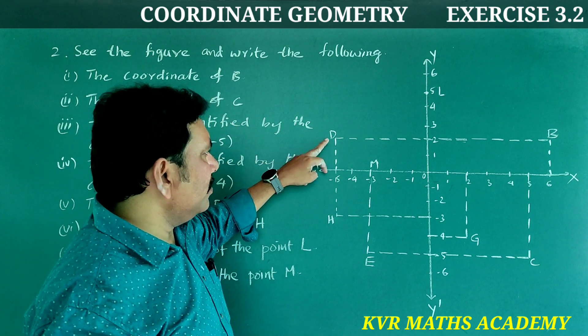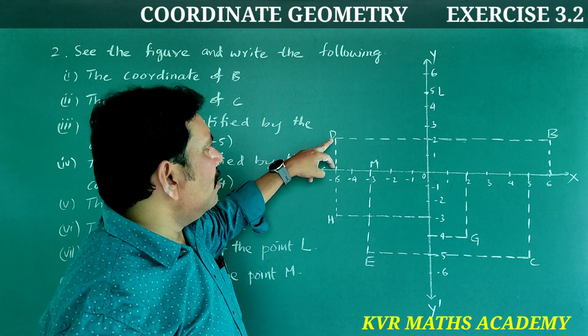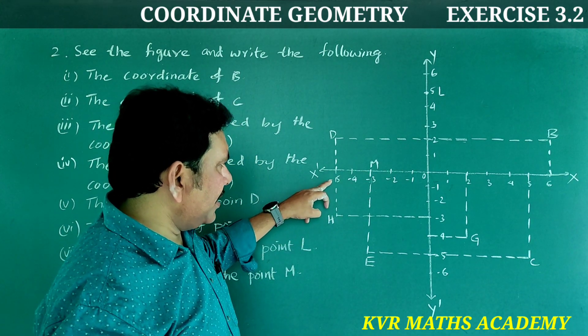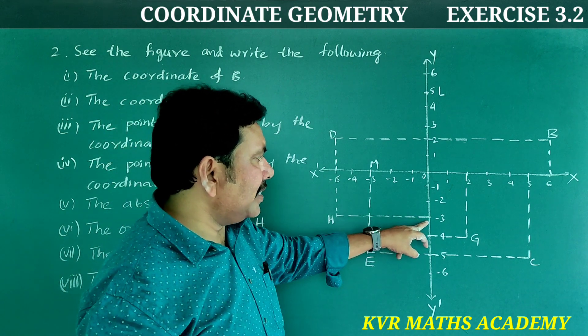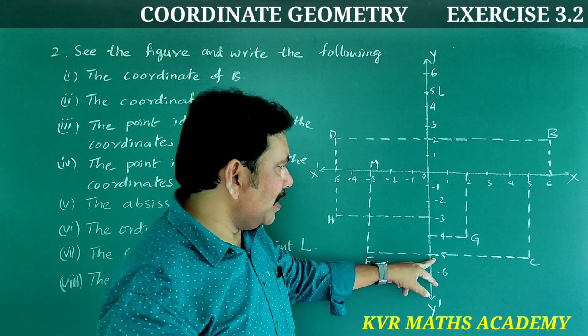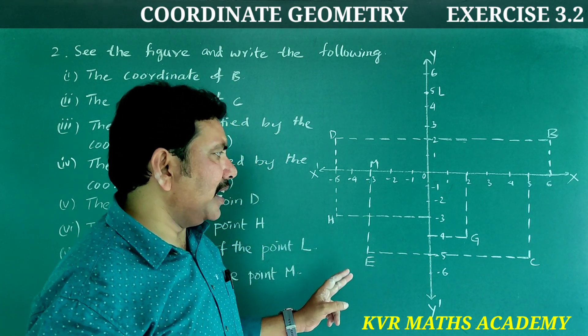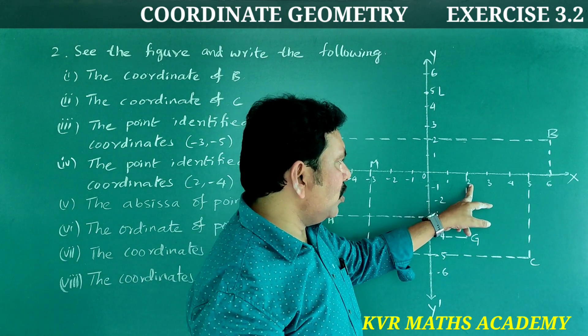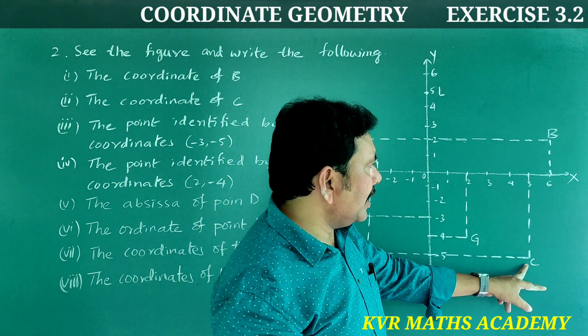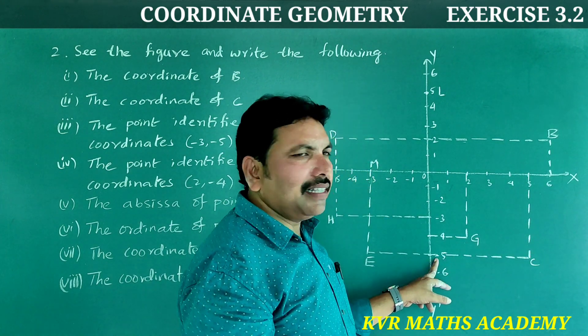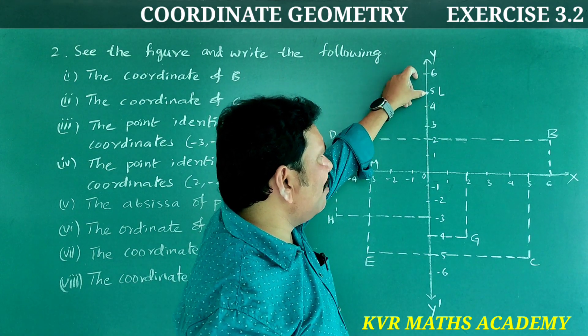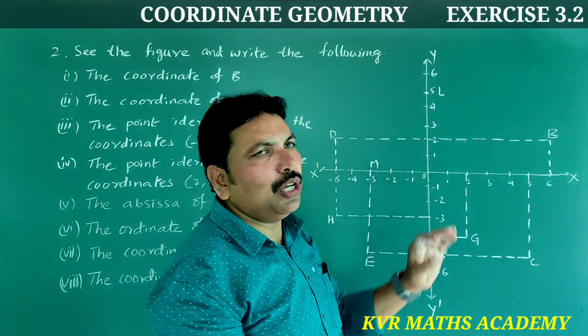B is at the origin. D is at x-axis -5, y-axis 2, so (-5, 2). Next M is at x-axis -5, y-axis -3, so (-5, -3). E is at x-axis -3, y-axis -5, so (-3, -5). G is at x-axis 2, y-axis -4, so (2, -4). C is at x-axis 5, y-axis -5, so (5, -5). L is at x-axis 0, y-axis 5, so (0, 5).